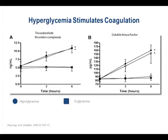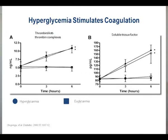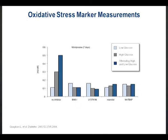Hypoglycemia stimulates coagulation. Thinking about your pregnant patients who are at risk of developing DVTs — if they're hypoglycemic, you add to the risk of thrombosis. So the more hypoglycemia you have, the greater your pro-coagulant factors are in the blood.